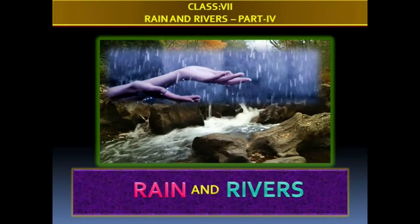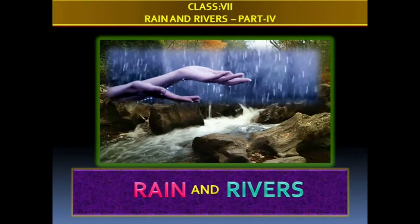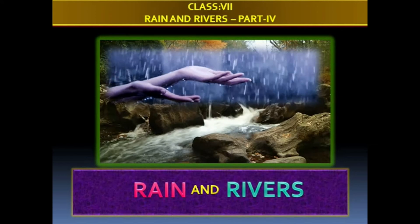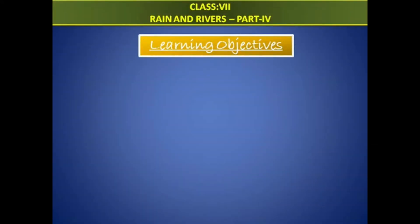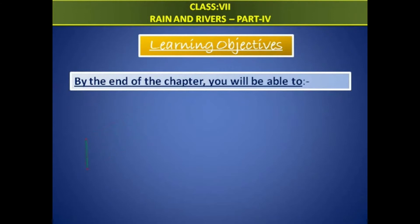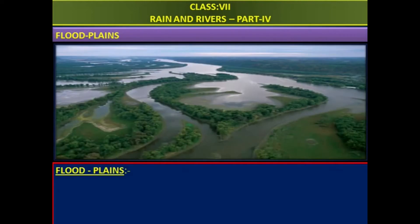Today, we are discussing Rain and Rivers Part 4. The objective of this lesson is that by the end of the chapter, you will be able to elaborate flat plains. Now let us learn about flat plains in detail.